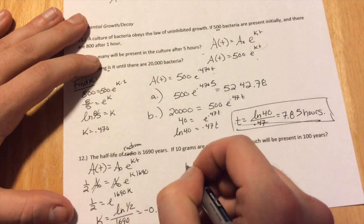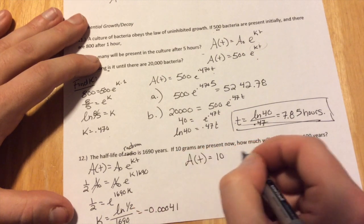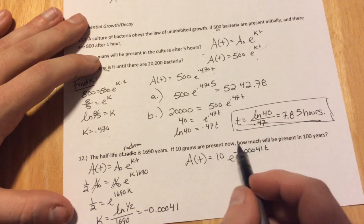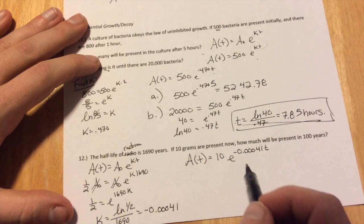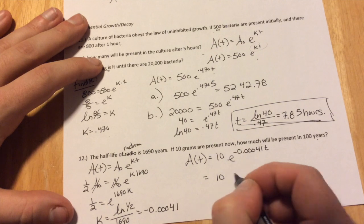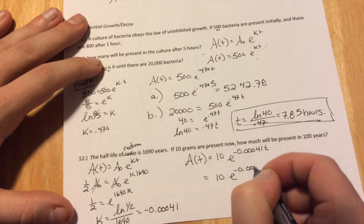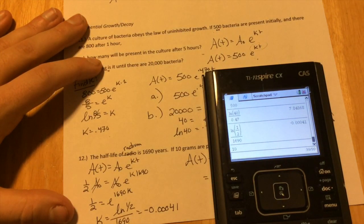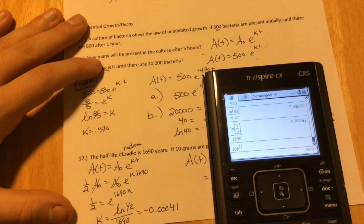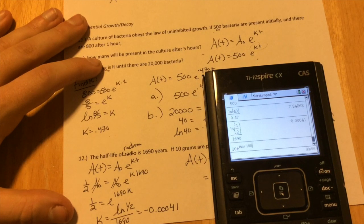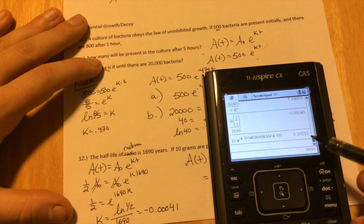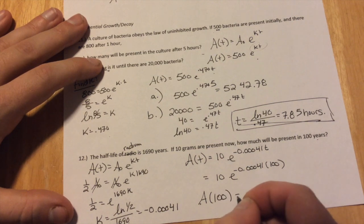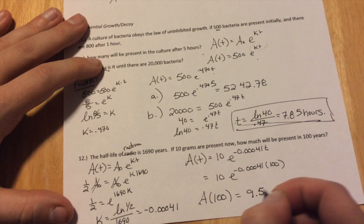So if we want to rewrite our formula, it's A of T equals the initial amount, which is 10 grams, E to the negative 0.00041 times T. Now it's saying, how much will be present in 100 years? So now we're just plugging in 100. So we do 10 grams, E to the negative 0.00041 times 100. So if I do 10, E, and I'm going to cheat a little bit and say our answer times 100, that gives me 9.598 grams. So my answer, A of 100 years, it's decreased to 9.598 grams.